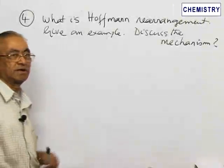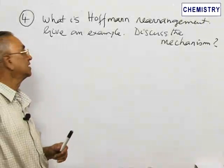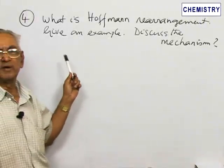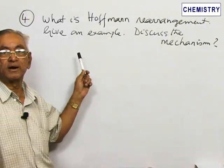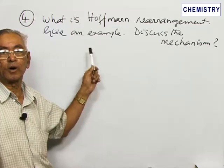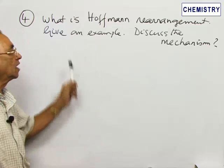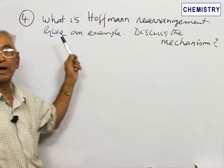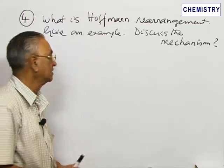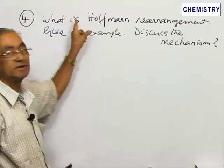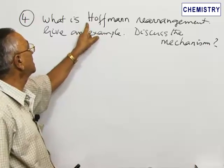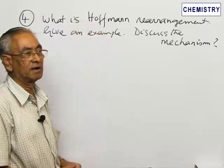We are going to the fourth question in the series. This is a very important rearrangement among the nitrogen-containing organic compounds. This is not relating to an amine, but this relates to an amide. The question asked is: what is meant by, or explain what is meant by, Hofmann rearrangement.